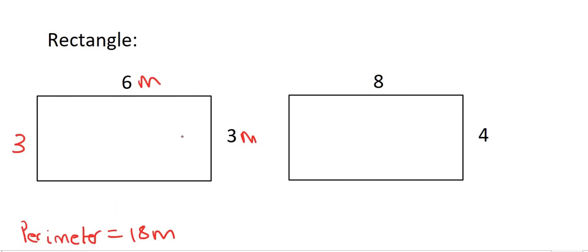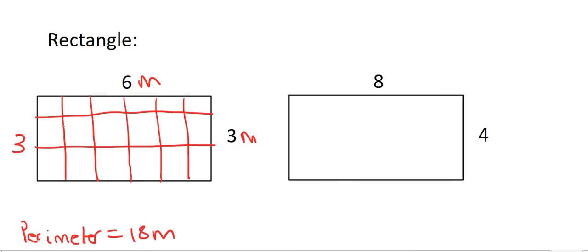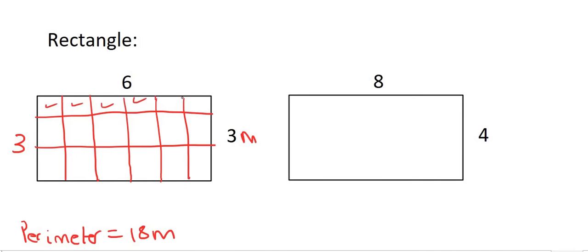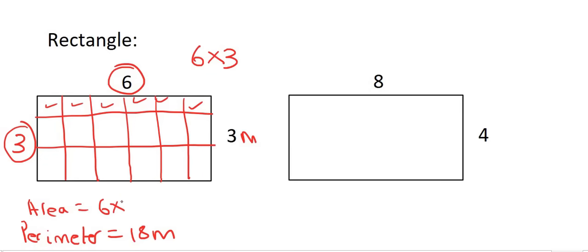That gives us 18 meters. For the area, we use the same approach as for the square. If we have six units going to the side, we make six blocks, then three rows going down. How many blocks are at the top? There are six. How many of those rows are there? Three. So we say six times three. To find the area of a rectangle, you multiply one side by the other: six times three equals 18 meters squared. Don't worry about the fact that the perimeter and area are both 18 — that sometimes happens but doesn't always.